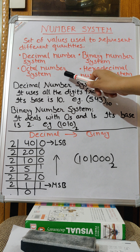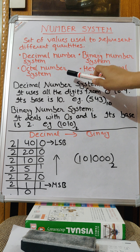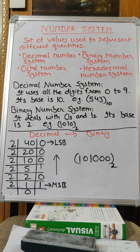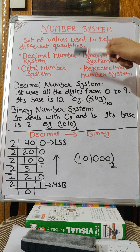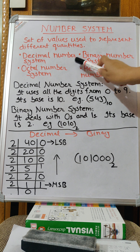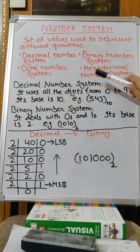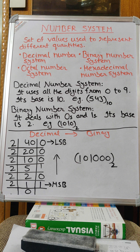Apart from decimal and binary, there is also octal number system and hexadecimal number system. So in computer number systems we will study first decimal number system, then binary, then octal and hexadecimal number system. Today we will start with decimal number system.